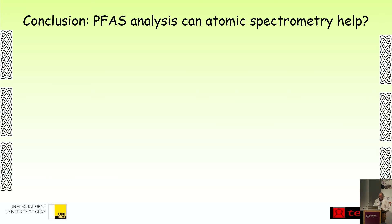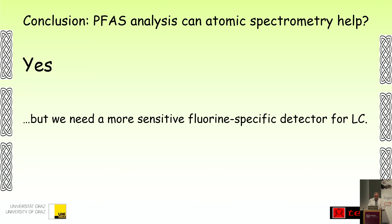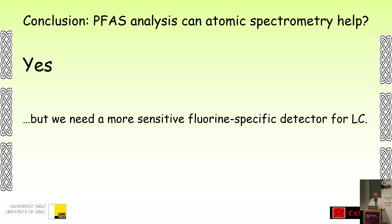I want to conclude: PFAS analysis — can atomic spectrometry help? I say yes. But we need a more sensitive fluorine detector for LC and also for GC. If there are manufacturers here, please do it.